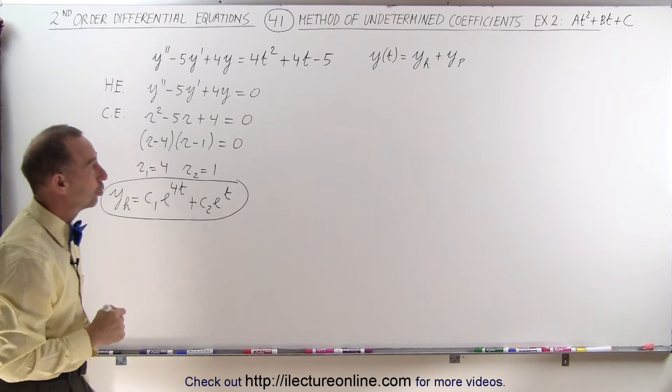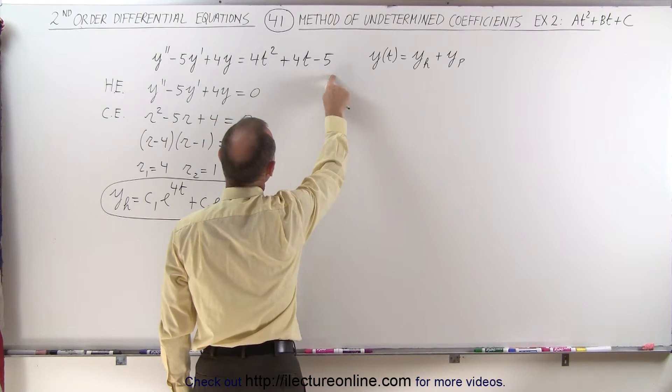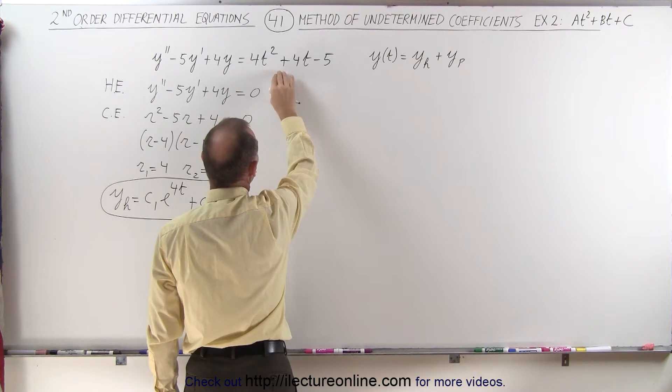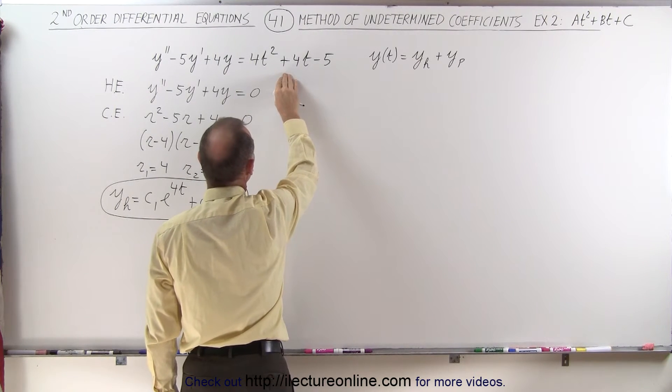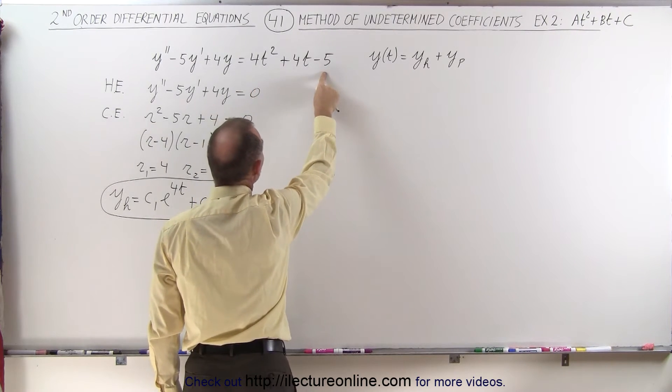Now how do we find the particular solution? Well, we know here that g of t is a polynomial. So we know that it must look like this in the general format and therefore we're going to rewrite this with unknown coefficients a, b, and c.